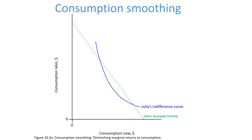In Figure 10.2, we show Julia's visible frontier, which indicates what she is able to consume. Now, let's add her preferences.